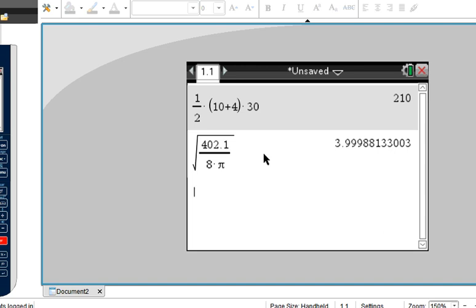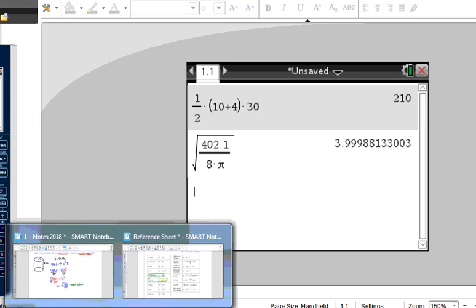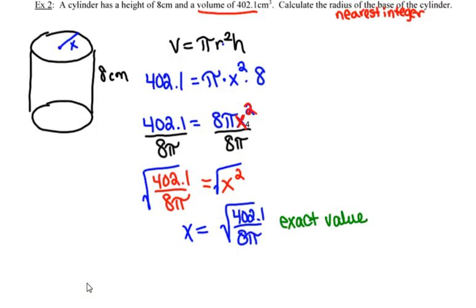So when we plug that into our calculator and round to the nearest integer, that radius ends up being approximately 4. So an approximate value here, or a rounded value, is about 4.